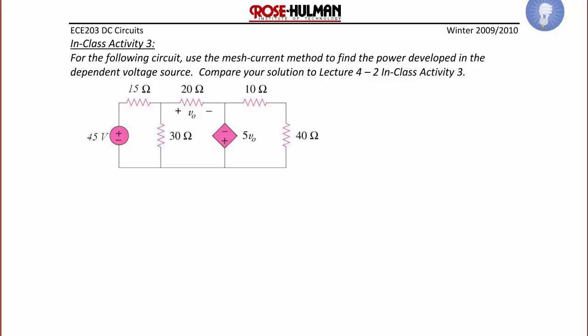In-class activity 3. For the following circuit, use the mesh current method to find the power developed in the dependent voltage source. Compare your solution to lecture 4-3 and in-class activity 3. As before, the first thing we're going to do is to label the three mesh currents: I1, I2, and I3.